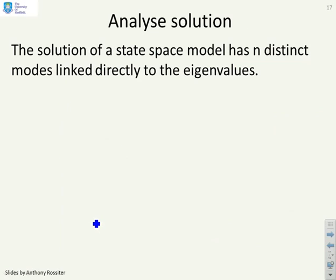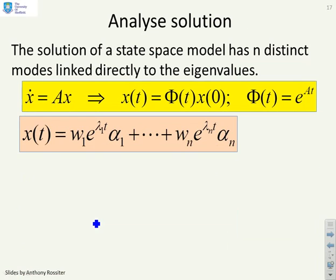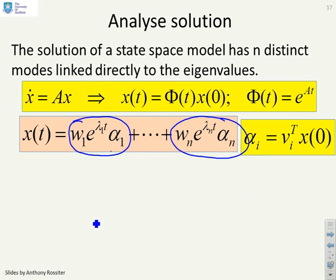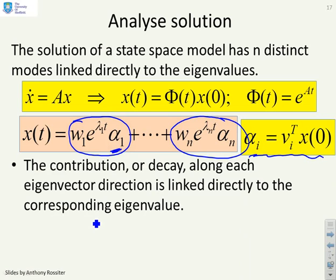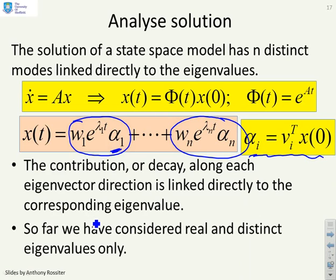In summary, the solution of a state-space model has n distinct modes linked directly to the eigenvalues. x(t) has a contribution from each eigenvalue, directed along the corresponding eigenvector, with coefficients α determined from α_i = v_i^T * x(0). The contribution or decay along each eigenvector direction is linked directly to the corresponding eigenvalue. So far, only real and distinct eigenvalues have been considered.